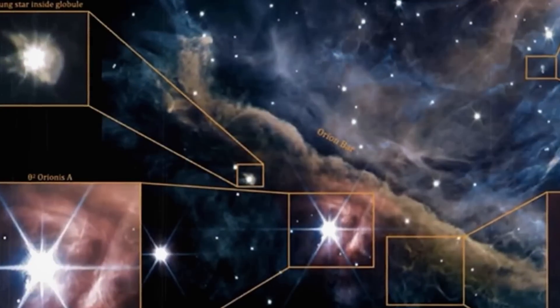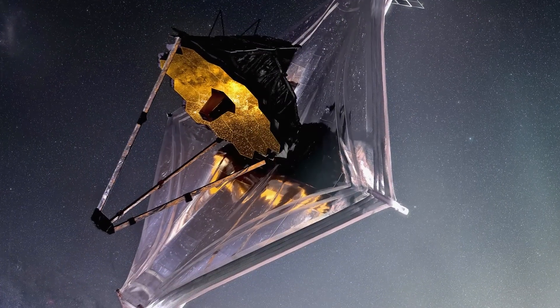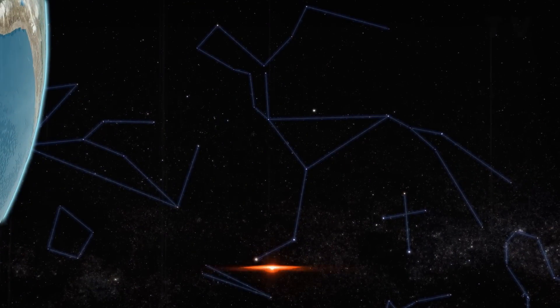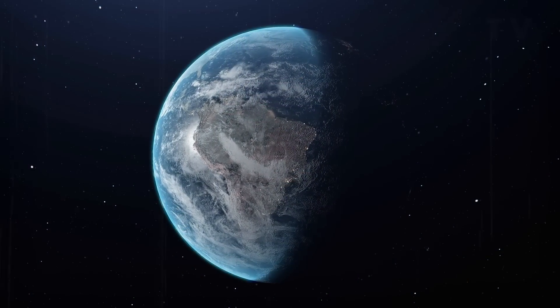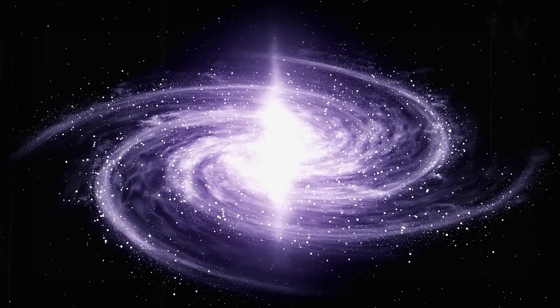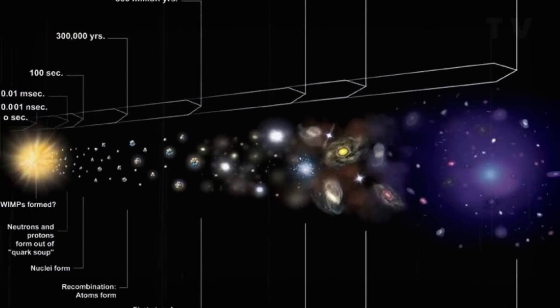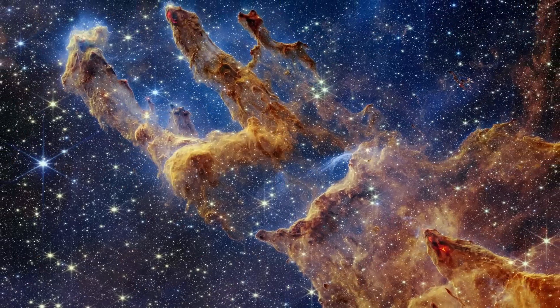And just when we thought that the situation couldn't get more perplexing, Webb pulls out an UNO reverse. Yes, astronomers have just stumbled upon an unprecedented discovery: a tiny galaxy that is a star-forming machine. The galaxy, located a mere 500 to 550 million years after the Big Bang, is churning out stars at a dizzying rate. The real kicker? This galaxy is only 16 kiloparsecs wide, making it the smallest galaxy we've ever seen that's capable of such a feat.